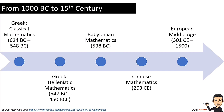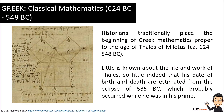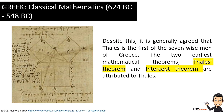We will now proceed to 1000 BC to the 15th century. In this period we have Greek classical mathematics. Historians traditionally place the beginning of Greek mathematics proper to the age of Thales of Miletus. Who is Thales of Miletus? He was a mathematician and astronomer from the Greek city of Miletus, regarded as the first philosopher in the western tradition. So little is known about his life and work that his dates of birth and death are estimated from the eclipse of 585 BC. It is generally agreed that Thales is the first of the seven wise men of Greece.